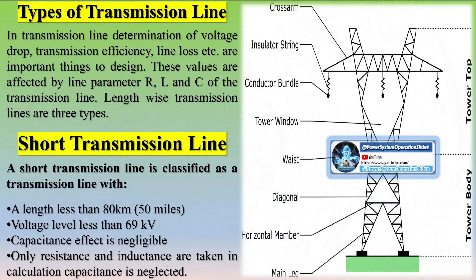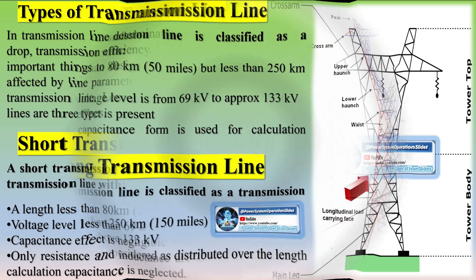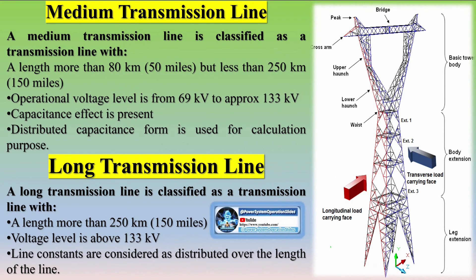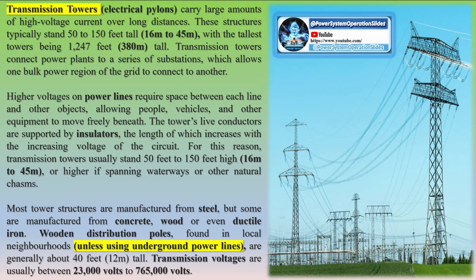A transmission tower, also known as an electricity pylon or simply a pylon in British English and as a hydro tower in Canadian English, is a tall structure, usually a steel lattice tower, used to support an overhead power line. Transmission towers support the high voltage conductors of overhead power lines from the generating station switchyard right up to the source substations and satellite substations located near populated areas.